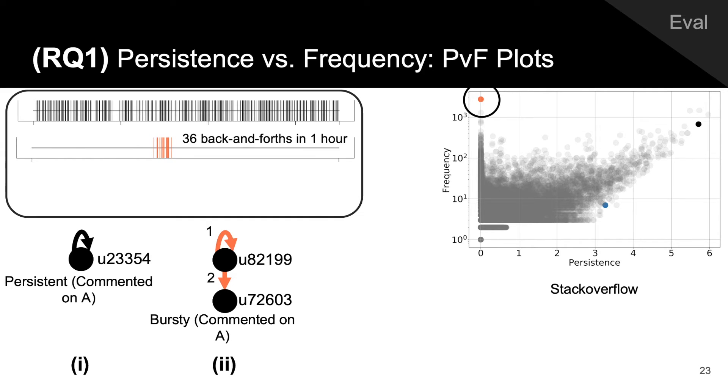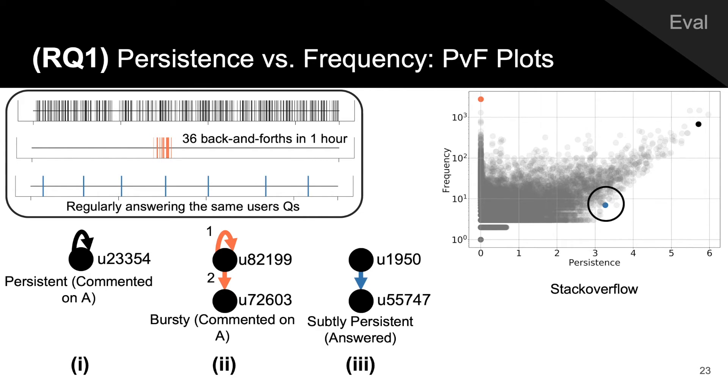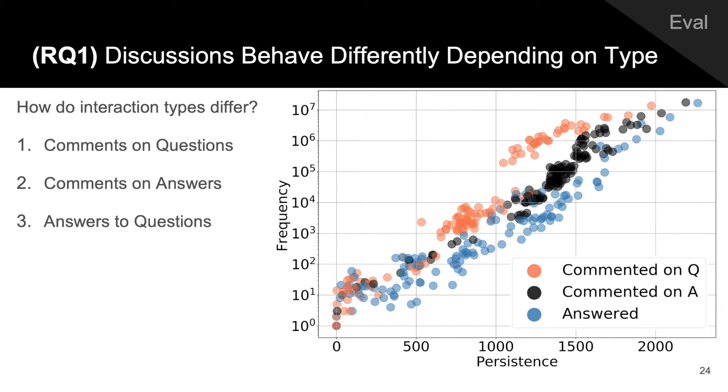Bursty activity, which falls in the upper left of PVF plots, in this case reveals two users who had 36 back and forth in just one hour. And subtly persistent activity, which falls in the lower right of PVF plots, in this case reveals a user who regularly answered the same user's questions.